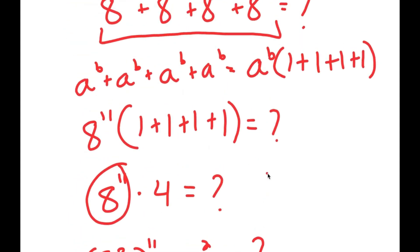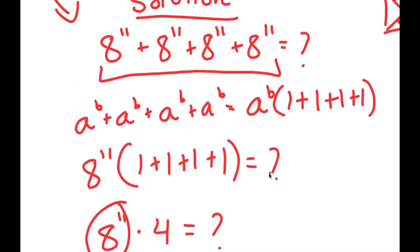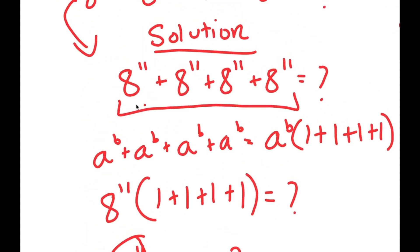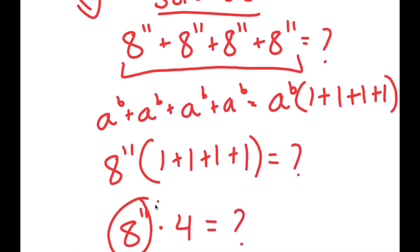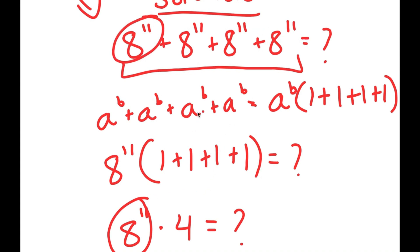Also, this solving process could have been faster from the first step: I took three steps to rewrite 8¹¹ added four times as 8¹¹ times 4, when I could have simply recognized that when the same term is added x times, it's just that term times x. So that's a faster shortcut.